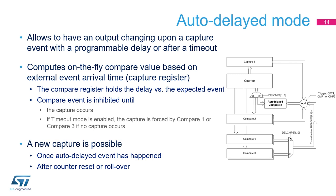Auto-delayed mode offers the possibility to have set and reset timings referenced to external events and not only related to the internal time base. A time-out mechanism can ensure a default waveform when the external event is not present or disappears. The HR timer computes a new compare value on the fly based on the external event arrival time captured in a register. The delay versus the expected event is programmed in the compare register, but the compare event is inhibited until the capture is triggered. When the time-out safety mechanism is enabled, the capture is forced when the counter equals the time-out threshold defined in Compare 1 or Compare 3.